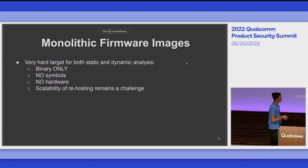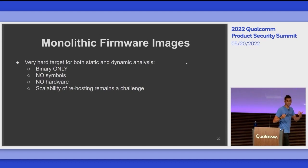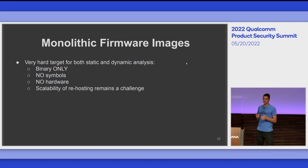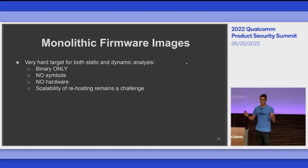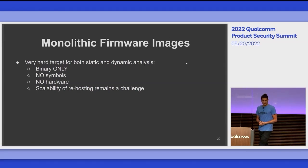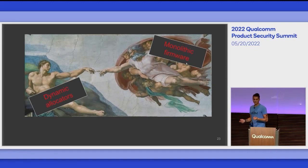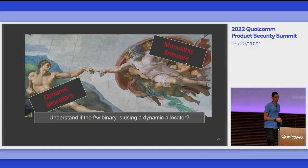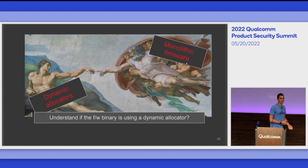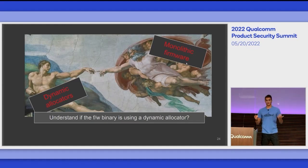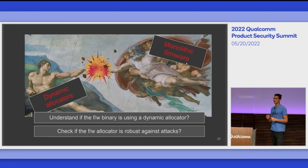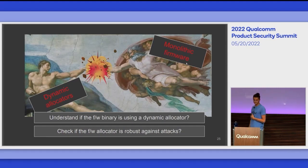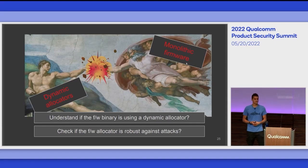Sometimes you don't even know what hardware the binary is supposed to run on. And if you want to do large-scale analysis of many firmware images of this kind, rehosting technologies are kind of behind — it's very difficult to fully emulate all this firmware. For this research, we want to combine the world of dynamic allocators and the world of monolithic firmware. The first question is: can we understand if a firmware binary is using a dynamic allocator at all? And can we check if the firmware allocator is robust against known attacks? These are the research questions we explore.